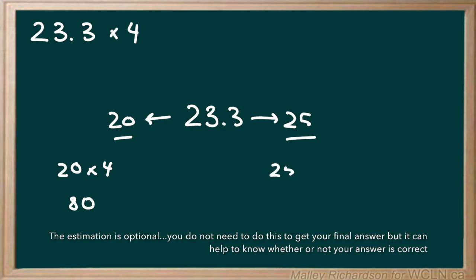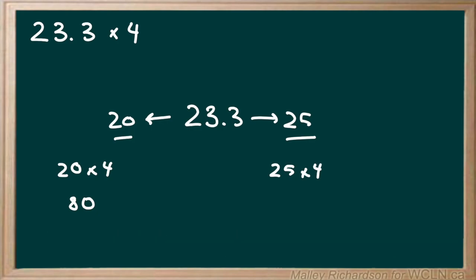And then we do 25 times 4 and we know that 25 times 2 gives us 50 so that means 25 times 4 should give us 100. So our final answer should be anywhere between 80 to 100.